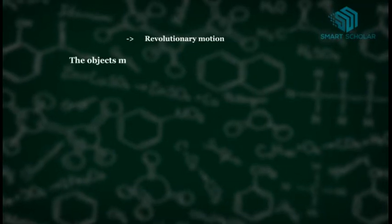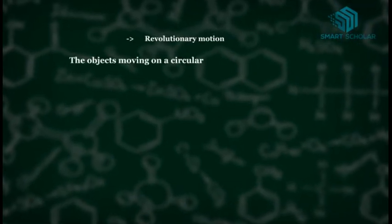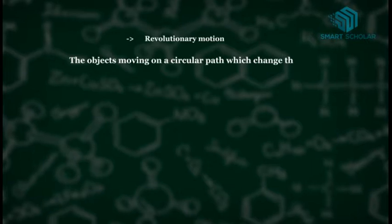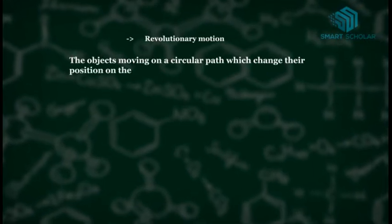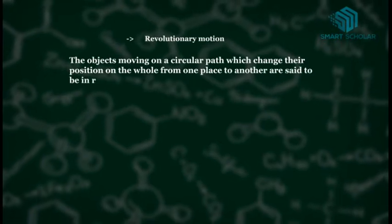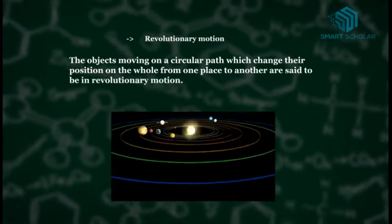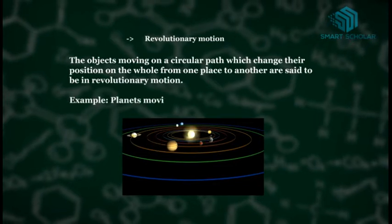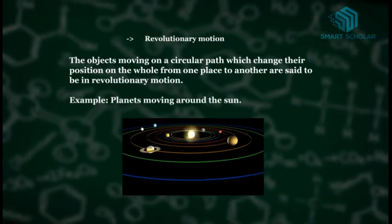Revolutionary motion: Objects moving on a circular path which change their position from one place to another are said to be in revolutionary motion. For example, planets moving around the sun.